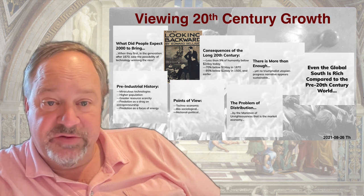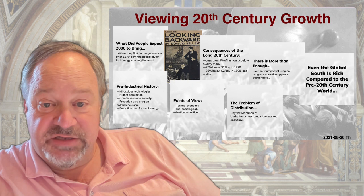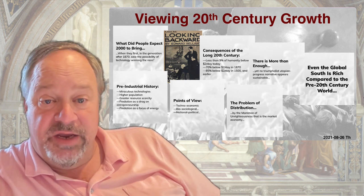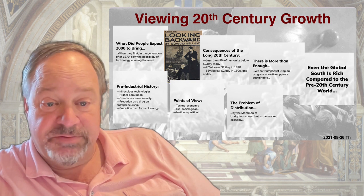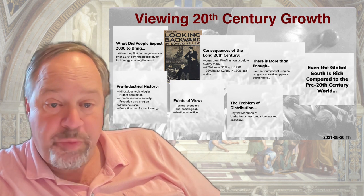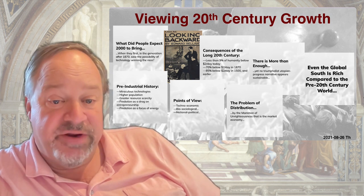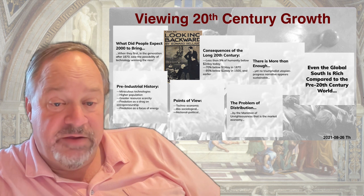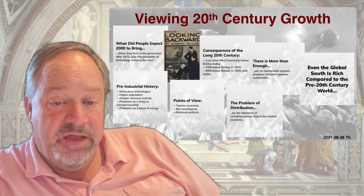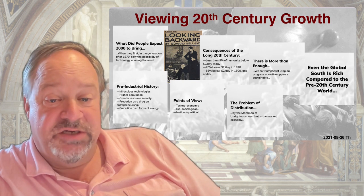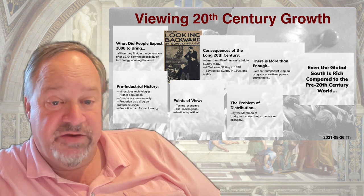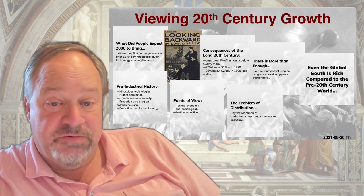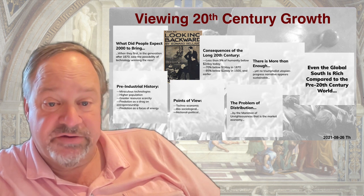What did people expect the year 2000 or so to bring, when they first saw, after the generation of 1870, the possibility of technology finally winning the Malthusian race against population and creating a world of abundance? Pre-industrial history had brought miraculous technologies, but these were developed only very slowly, and there was time for higher population to offset them. Miraculous technologies led to increasing living standards, which led to more babies surviving, producing higher population, which pushed the typical standard of living back down again.